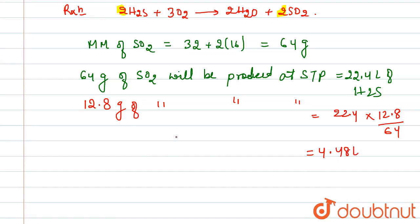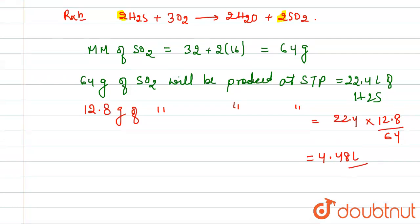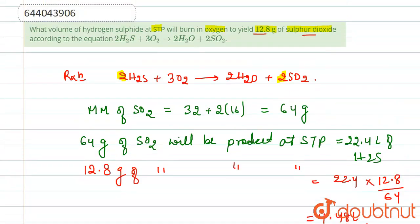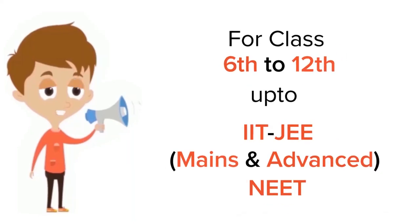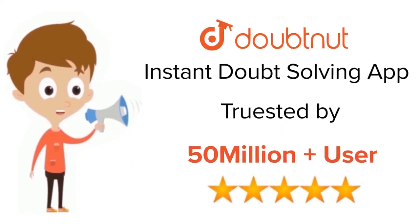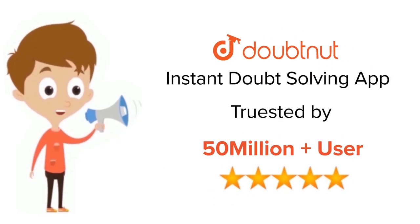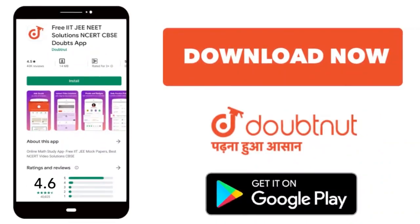So 4.48 liters of hydrogen sulfide at STP will burn in oxygen to yield 12.8 grams of sulfur dioxide. This is our required answer. Thank you. For class 6 to 12th, IIT JEE, and NEET level, trusted by more than 5 crore students — download DoubtNut today.